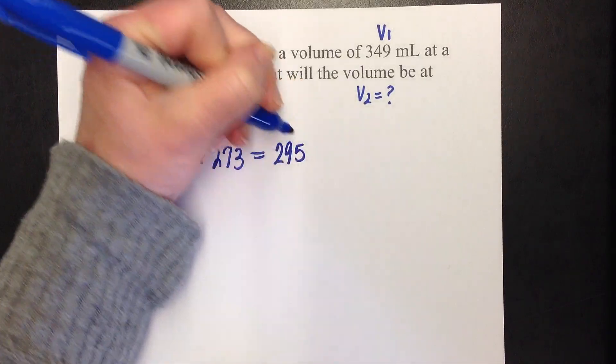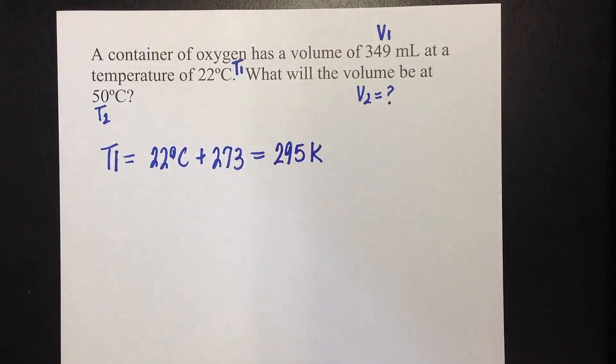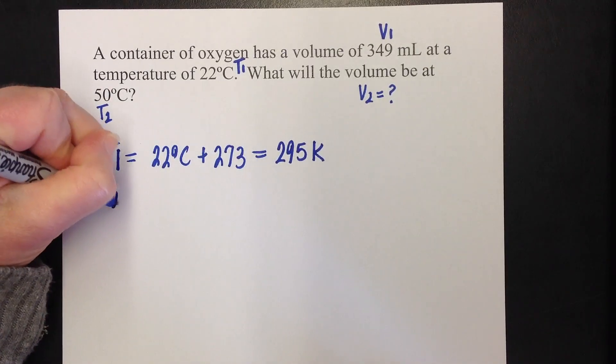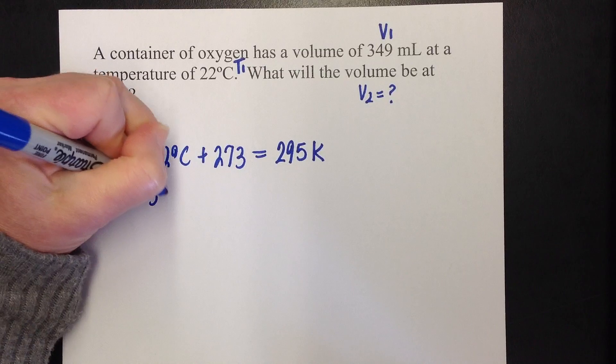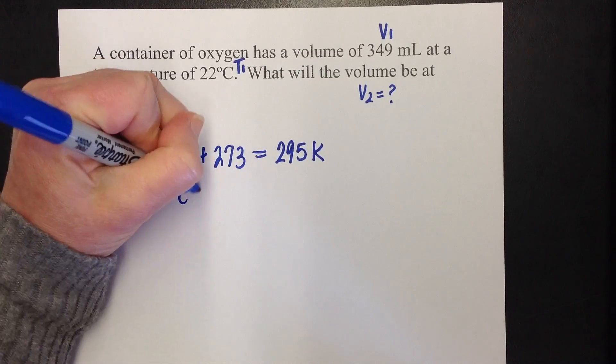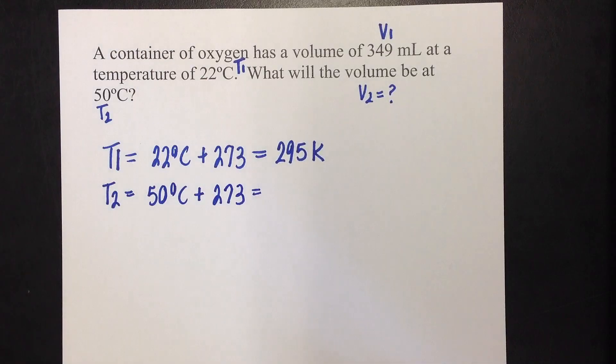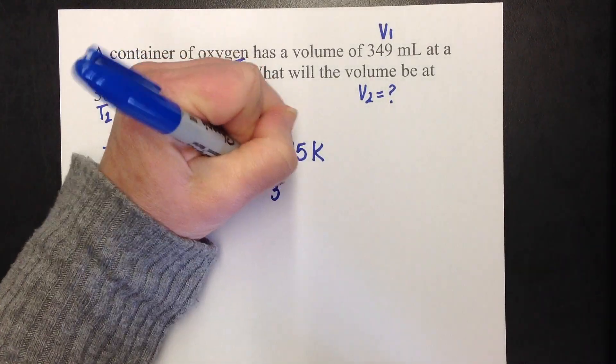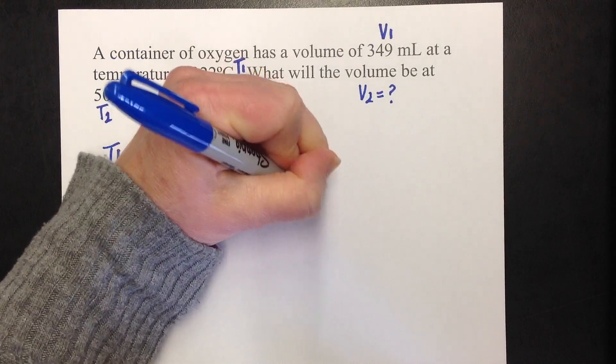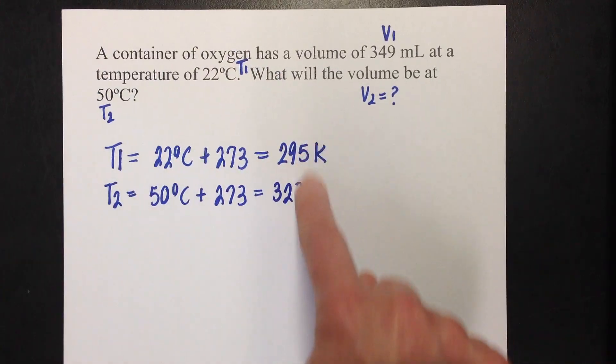Notice, I'm not putting a degree. It's just 295 K. T2 equals 50 degrees Celsius plus 273. And we already know that 50 plus 273 is 323 K because we just saw that in the last problem. So, there's my T1 and my T2.